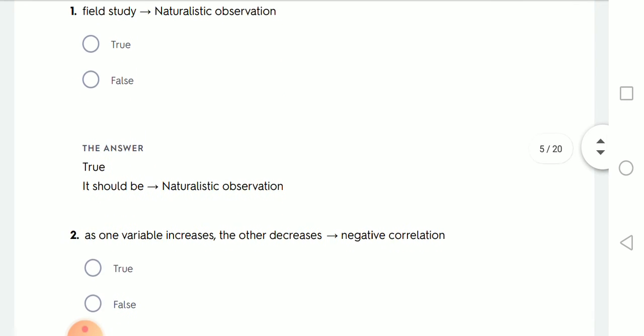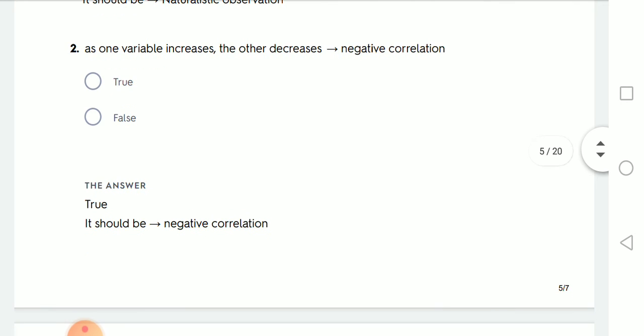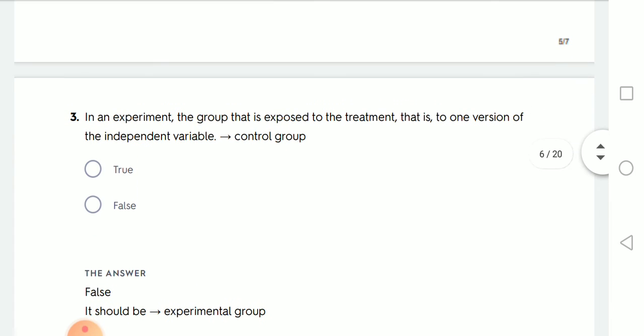As one variable increases, the other decreases, this is what? This is the negative correlation. As here one variable increase, the other decrease, this is the negative correlation.